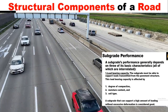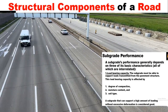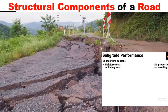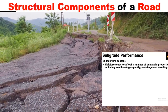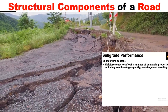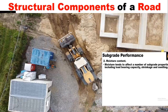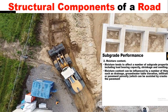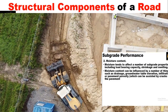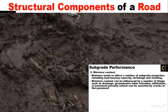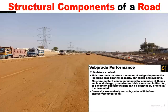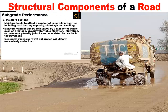Subgrade that can support a high amount of loading without excessive deformation is considered good. The second performance requirement for subgrade is moisture content. Moisture tends to affect a number of subgrade properties including load-bearing capacity, shrinkage, and swelling. Moisture content can be influenced by drainage, groundwater table elevation, and infiltration or pavement porosity, which can be caused by cracks in the pavement. Generally, excessively wet subgrade will deform excessively under load.